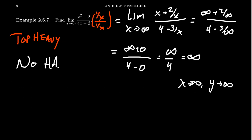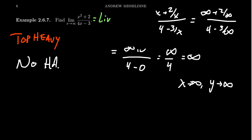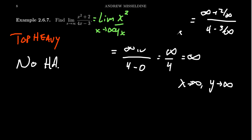For the third example, we take the limit of just the leading terms, because as you go toward infinity, nothing else matters — it's kind of like that Linkin Park song: in the end, it doesn't really matter, except for the leading terms. Here, the x terms cancel out, leaving x over 4. As x approaches infinity, this polynomial approaches infinity as well. When it comes to these rational expressions, just look at the ratio of the dominant terms on top and bottom — that gives you the final result.